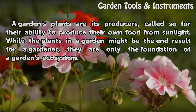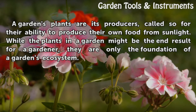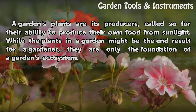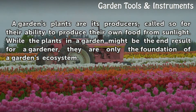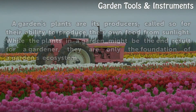A garden's plants are its producers, called so for their ability to produce their own food from sunlight. While the plants in a garden might be the end result for a gardener, they are only the foundation of a garden's ecosystem.